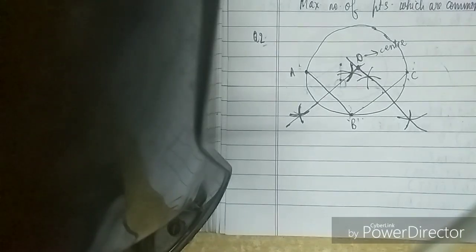Then we constructed the perpendicular bisector of AB and then BC. We saw that the point where both perpendicular bisectors met was the center of the circle.